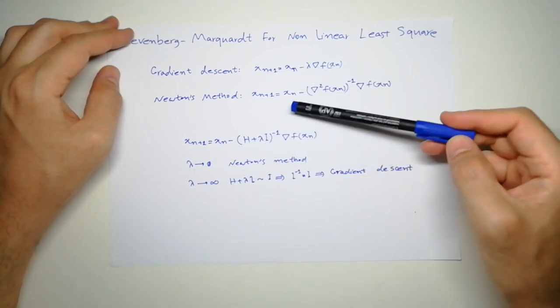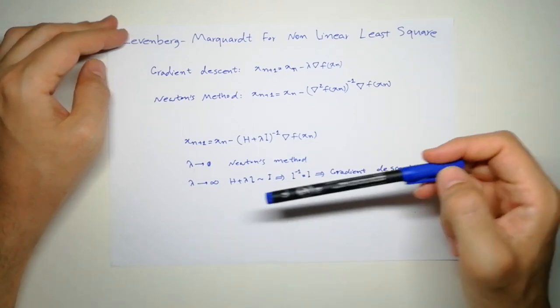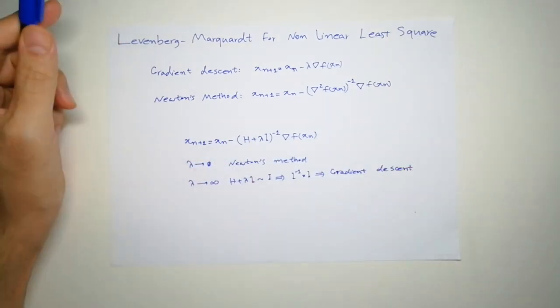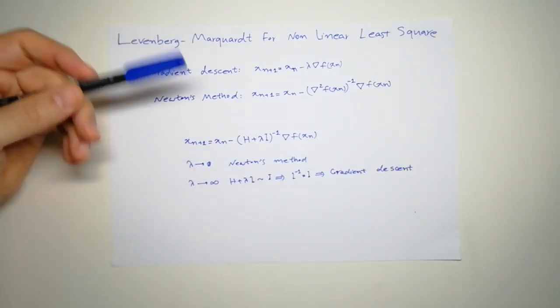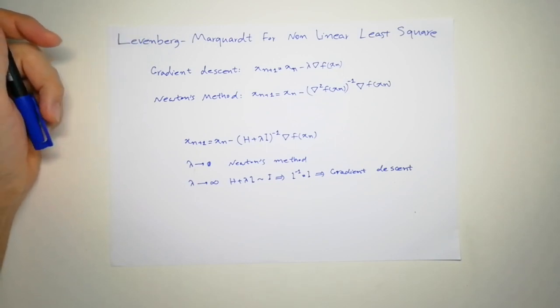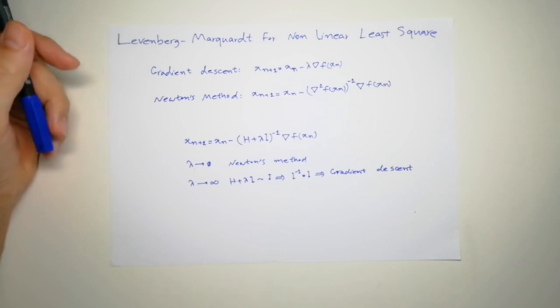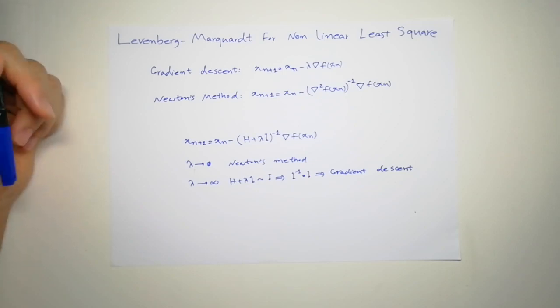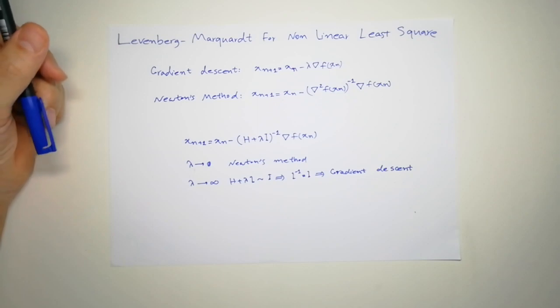As you can see, it has a flavor from both algorithms. It acts like gradient descent when the parameters are far away from the optimal point, and it acts more like Newton method when the parameters are close to the optimal value. That's why it's a very popular approach. Thank you for your attention.